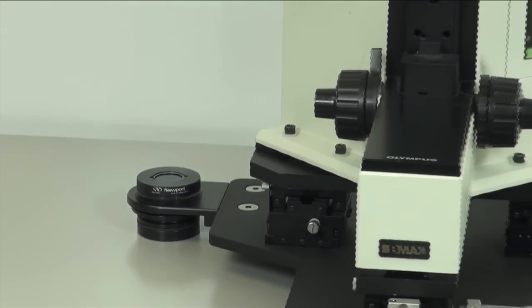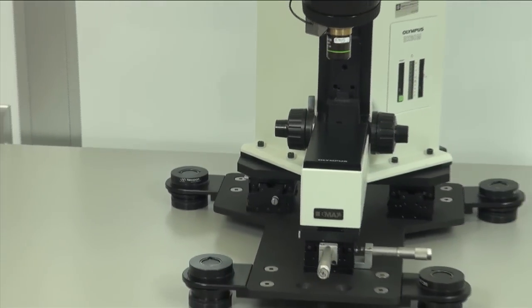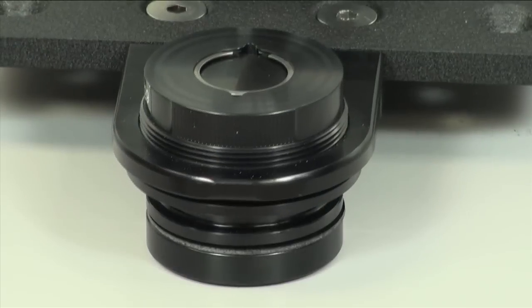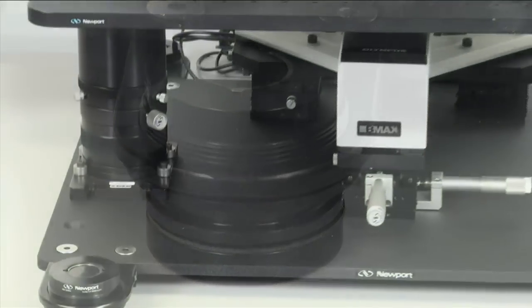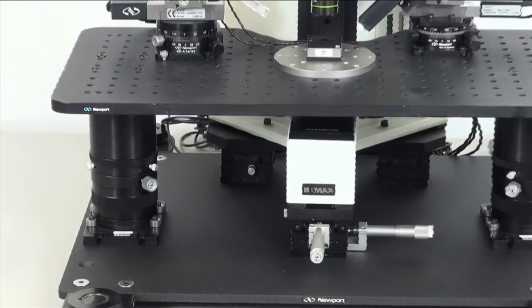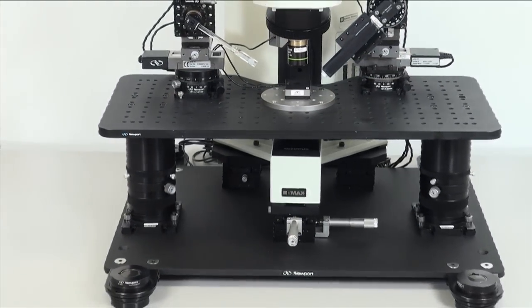All VIVE units feature a black powder-coated steel plate and patented mechanical isolators that provide both vertical and horizontal vibration isolation. There are no air lines, compressors, or other accessories needed to provide effective isolation performance.